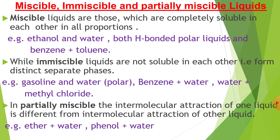Then, partially miscible liquids. The common example, also used in homes, is phenol plus water. Here, the intermolecular attraction of one liquid is different from the intermolecular attraction of the other liquid — that's why they do not completely dissolve and are called partially miscible liquids. Ether and water is also an example of partially miscible liquids.